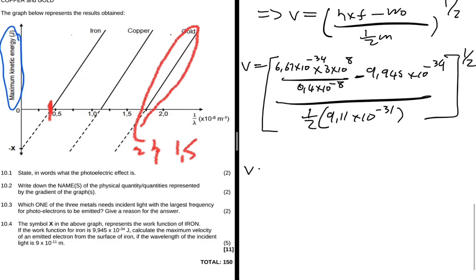Putting that into the calculator, v comes out to approximately 10.48 times 10 to the 7 meters per second as the maximum velocity of the emitted electron.